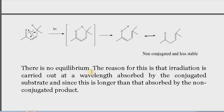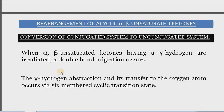One more interesting thing: the energy required to convert this conjugated system into the non-conjugated system is less than that required for the reverse process. So this reaction is irreversible; there is no equilibrium. The reason is that irradiation is carried out at a wavelength absorbed by the conjugated substrate, and since this wavelength is longer than that absorbed by the non-conjugated product, only the conjugated substrate is activated.